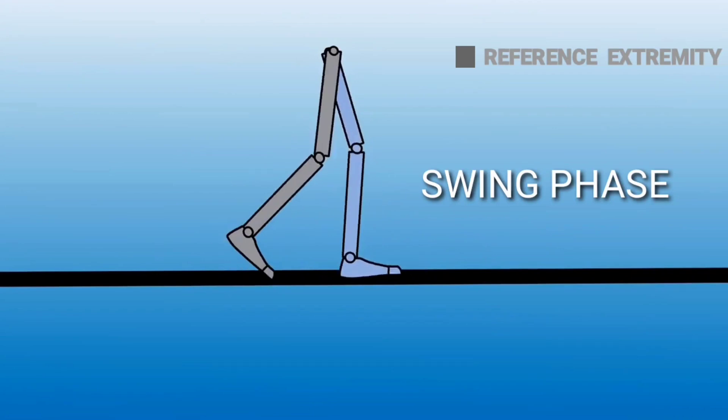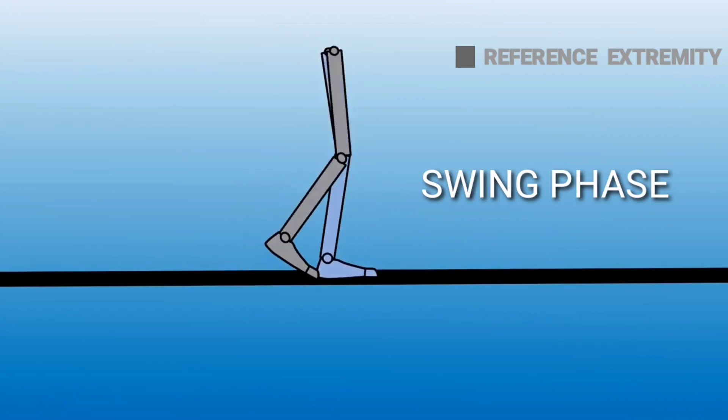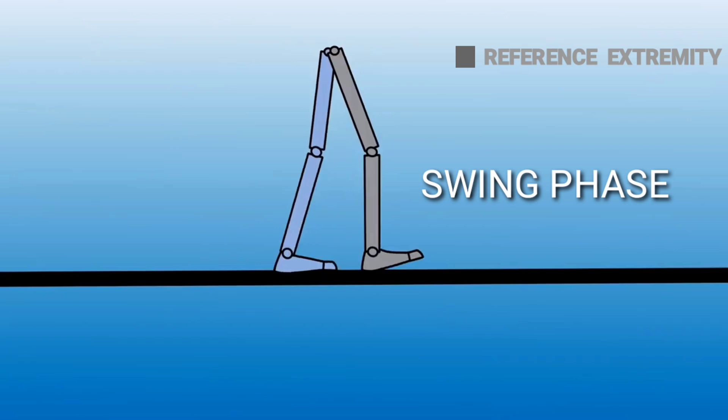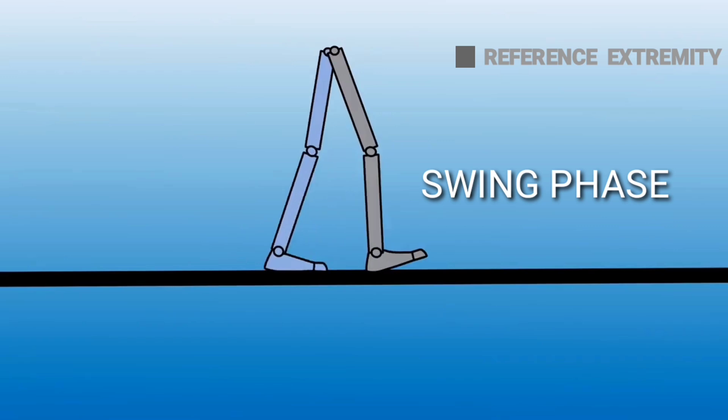Swing phase: when the extremity is not in contact with the ground, it is said to be in the swing phase. For example, if we take our right lower extremity as our reference extremity, when it is not in contact with the ground it is in the swing phase. This swing phase comprises about 40 percent of the gait cycle.